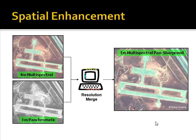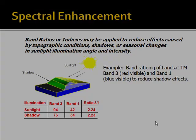This is an example of a process known as a resolution merge. We take a 4-meter multi-spectral image and a 1-meter panchromatic image, and apply a resolution merge to create the best of both worlds. The end product is a 1-meter multi-spectral pan-sharpened image, which has the spatial qualities of the panchromatic image along with the spectral qualities of the coarser resolution multi-spectral image.